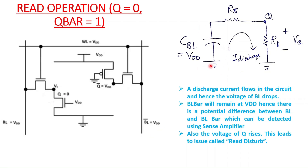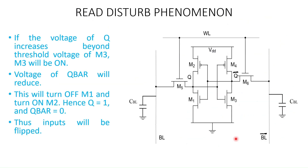An important thing to note is that when the discharge current flows, the voltage at point Q — denoted VQ — is across R1, so it will increase. Q was originally at zero, but after the read operation the voltage of Q rises due to the discharge of the bit line. When the voltage of Q rises, it can lead to an issue called read disturb.